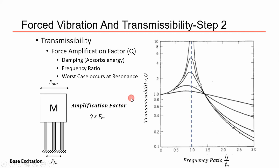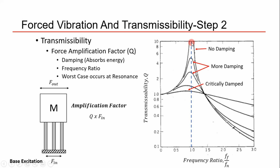This chart shows transmissibility as a function of frequency ratio. With no damping you get a high amplification factor; more damping shrinks the curve. At critical damping, the force isn't amplified at all. Transmissibility is a function of the input frequency over the system's natural frequency — when they're equal, you have resonance, which is the worst case on all curves. As a designer, you always want to design for the worst case.